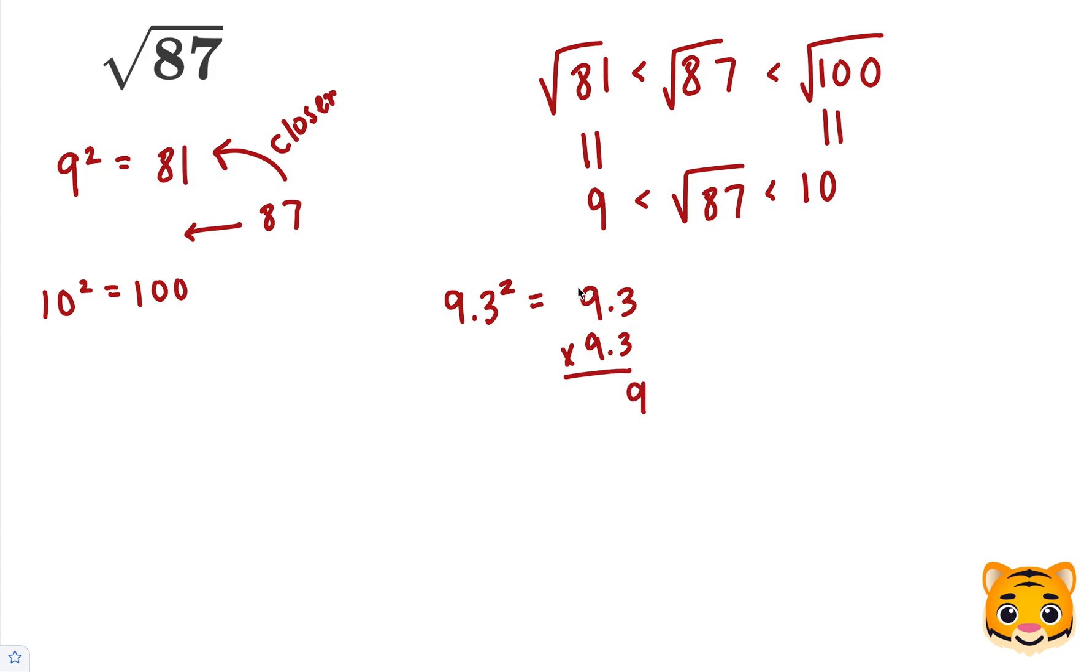3 times 3 is 9. 9 times 3 is 27, add our 0. 9 times 3 is 27, carry our 2. And then 9 times 9 is 81, plus 2 is 83. When we add these together, we end up getting 86.49, which is very close to 87.